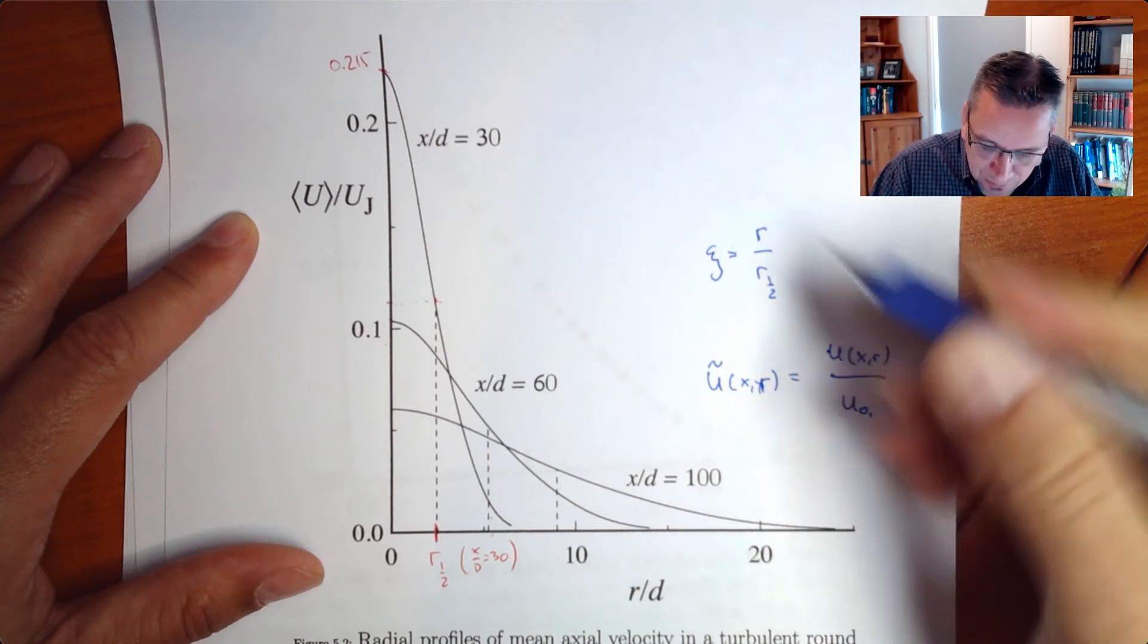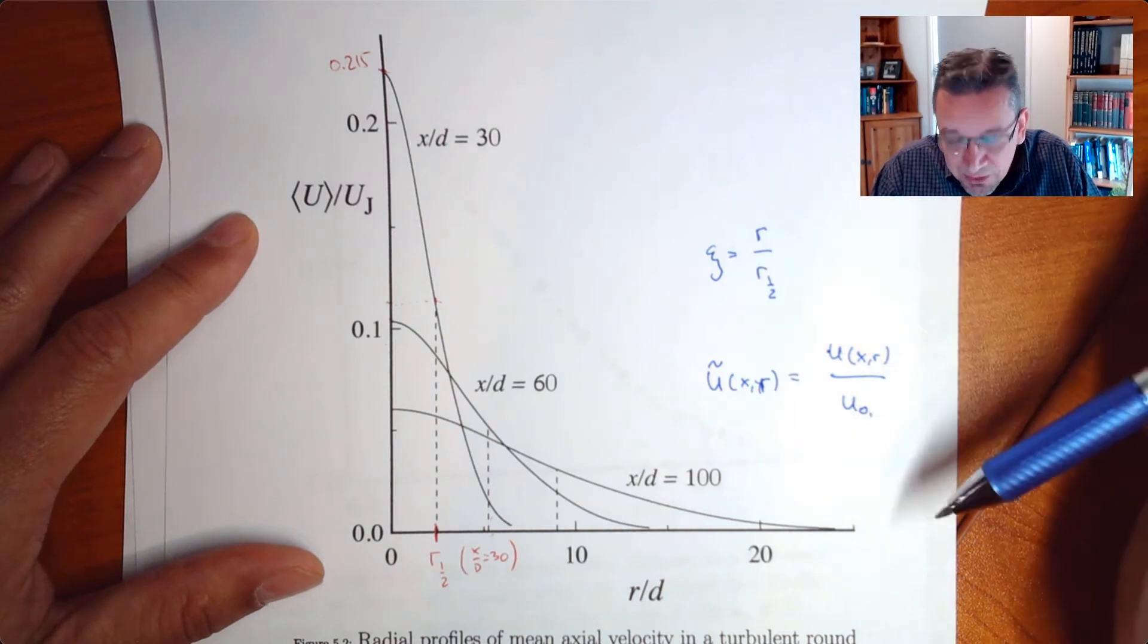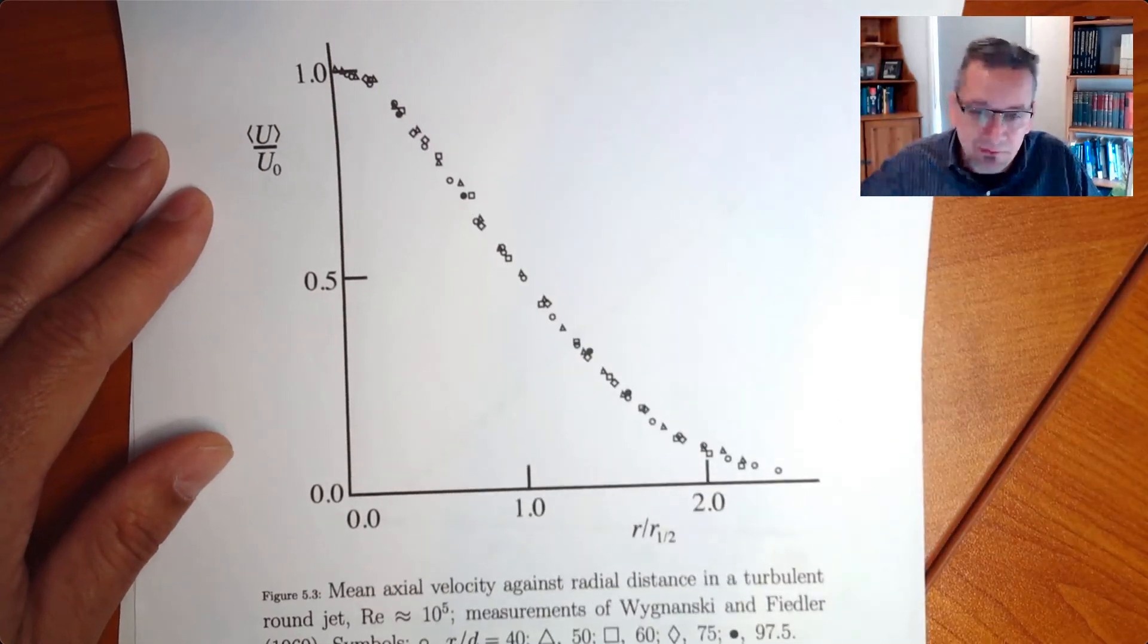The characteristic u tilde, it's going to be then the u at the velocity at the point over the centerline velocity, u knot, so the velocity at the center. So you're doing these two, you're doing that for all the velocity profiles, and ta-ta, you're going to get the following plot.